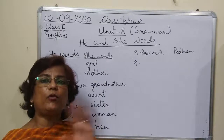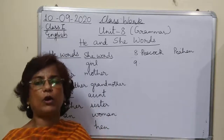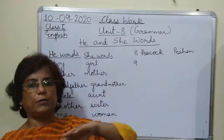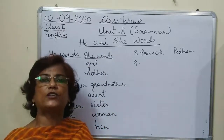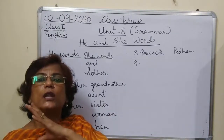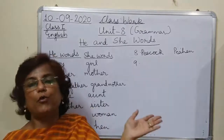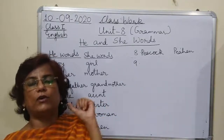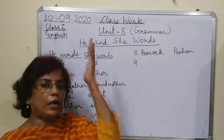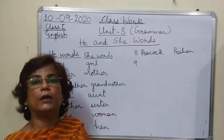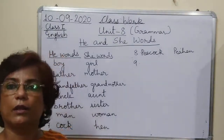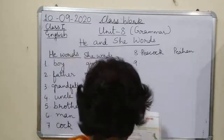Do you know the difference between mor and morni — peacock and peahen? Peacock ki bari si tail hoti hai, uske lambe lambe feathers hote hain. Jab rainy season mein mor apne pankh phailake naachta hai — when the peacock opens its feathers. Morni — jo peahen hoti hai — us ke waise long feathers nahi hote. Peacock ke head pe crown hota hai jis ko kalgi bolte hain Hindi mein. Peahen ke head pe that crown is not there.